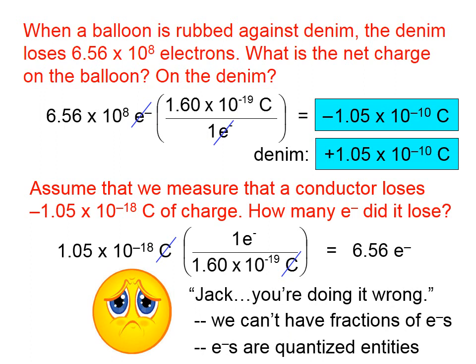Jack, you're doing it wrong. You can't have fractions of electrons, because electrons are quantized entities. You might have lost 6 electrons, or you might have lost 7, but you've never lost 6.56. So make sure whenever you do a problem, you think about the reasonableness of your answer. 6.56 electrons is not a reasonable answer.